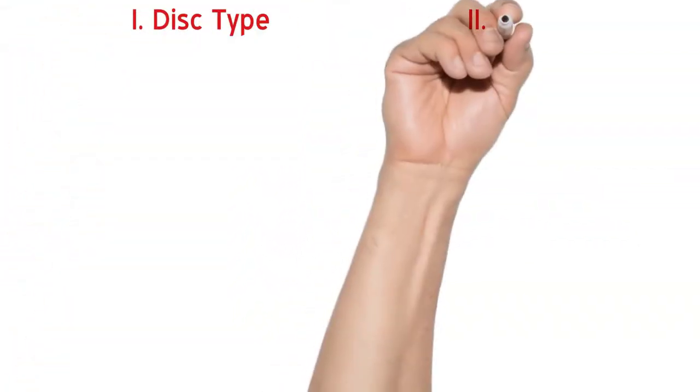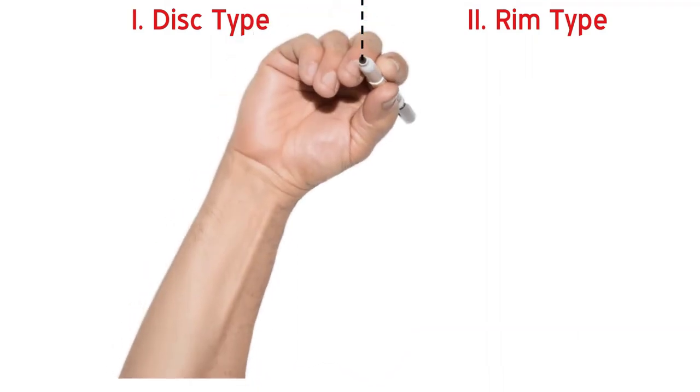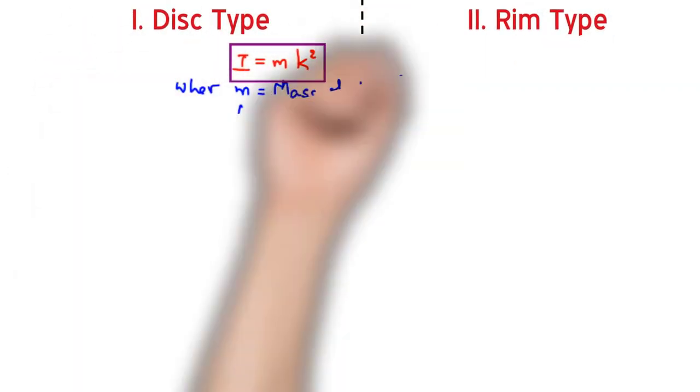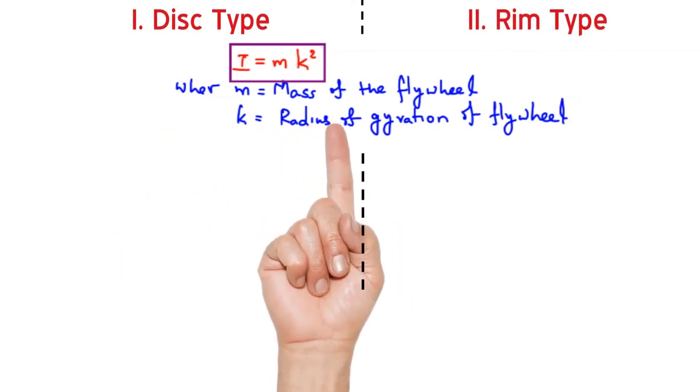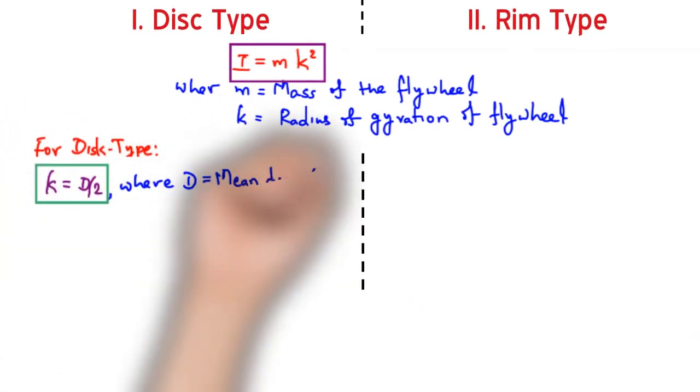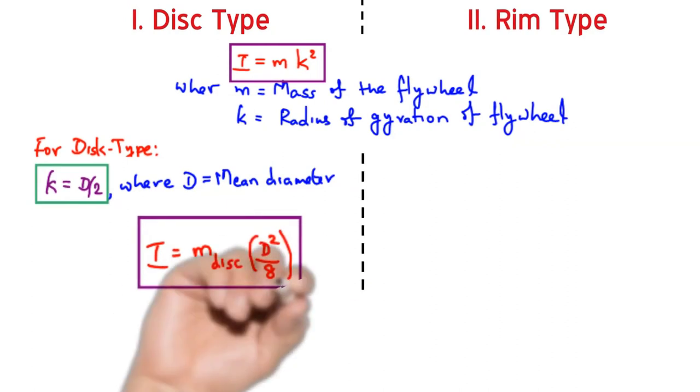Now can we support the logic mathematically? We know I equal to m k squared is the formula. For a disc type flywheel, the radius of gyration is given by d by 2, where d is the mean diameter. So substitute in the formula, we will get I equal to m d squared by 8.